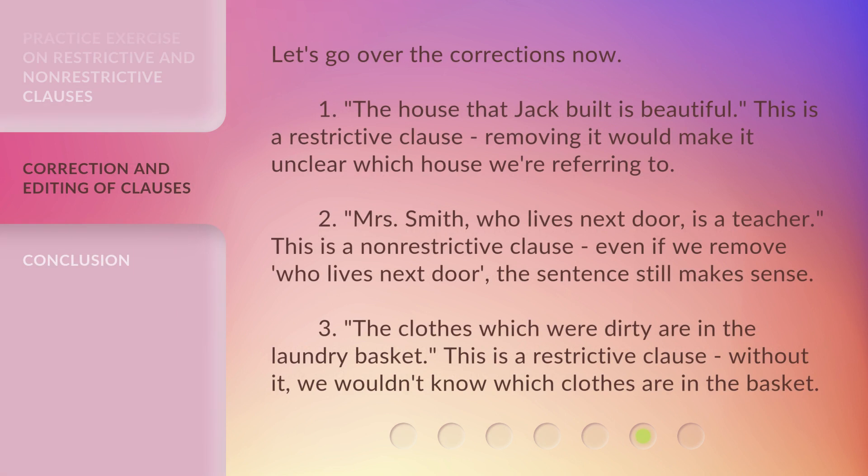Let's go over the corrections now. 1. 'The house that Jack built is beautiful.' This is a restrictive clause. Removing it would make it unclear which house we're referring to. 2. 'Mrs. Smith, who lives next door, is a teacher.' This is a non-restrictive clause. Even if we remove 'who lives next door,' the sentence still makes sense. 3. 'The clothes which were dirty are in the laundry basket.' This is a restrictive clause. Without it, we wouldn't know which clothes are in the basket.